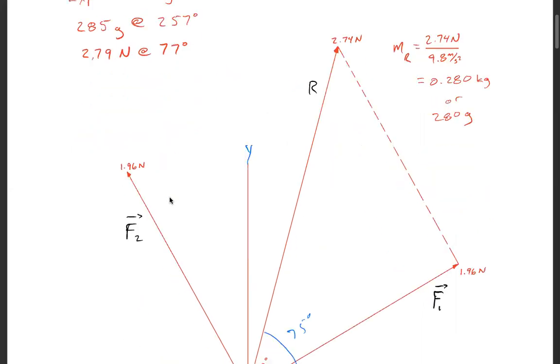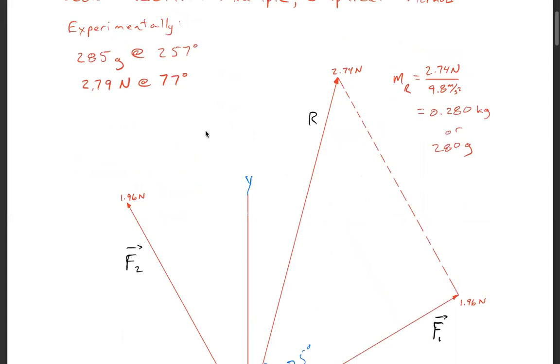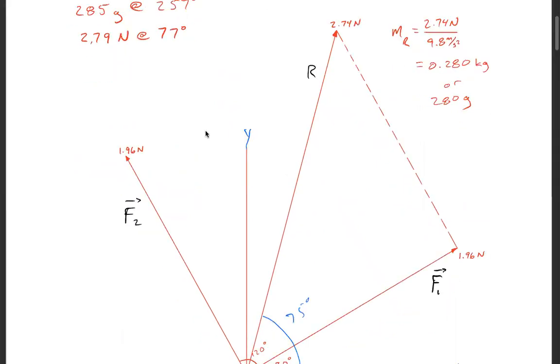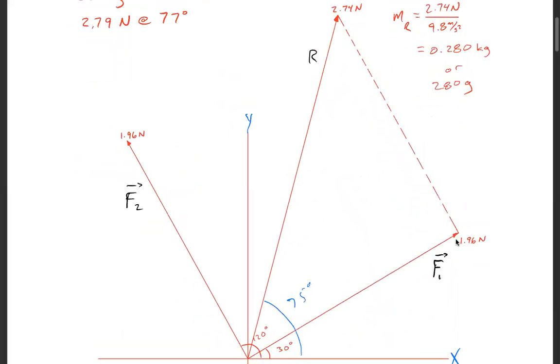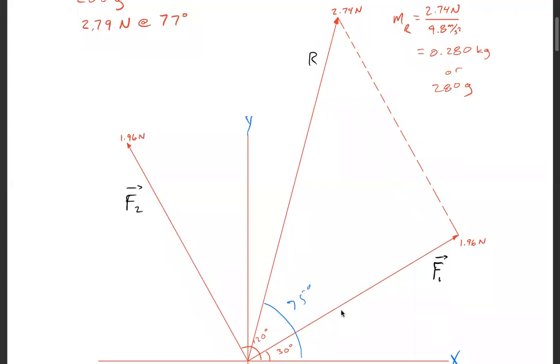Now we're going to do that graphically. Those are our experimental results. We have 1.96 Newtons. I just picked an arbitrary scale. I tried to make it big enough so that if you make it real small you end up with inaccurate results.